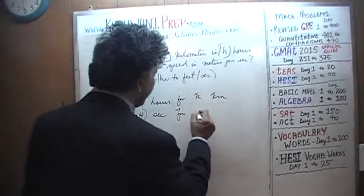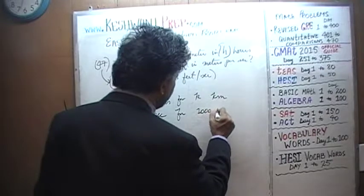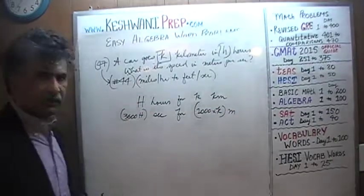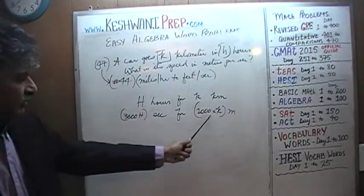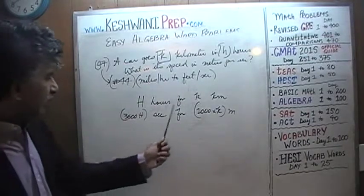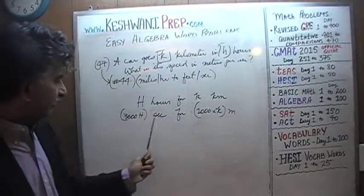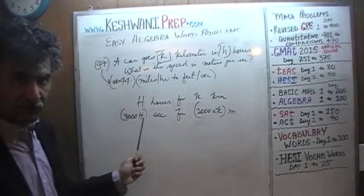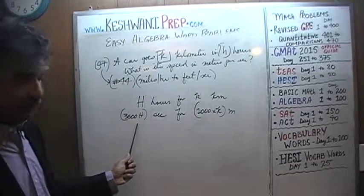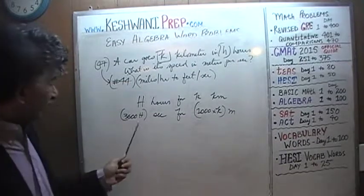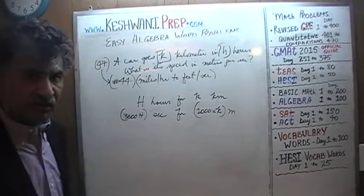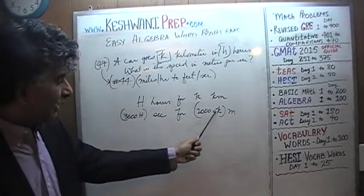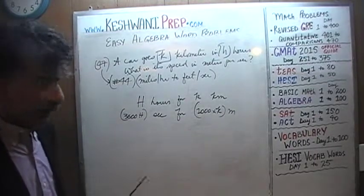For k kilometers, which is simply 1,000 times k meters. That's it. We are done. If we are taking this many seconds for this many meters, for example, if we are taking 2 seconds for this distance, if we can go this much distance in 2 seconds, how far can we go in 1 second? Half the distance. If we are taking 10 seconds for this much distance, how far can we go in 1 second? This amount divided by 10, a tenth of this amount.